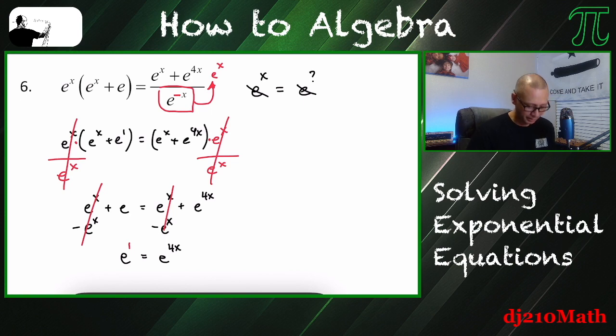So remember, it's implied that this is a 1, e to the first power. So now that I have the same bases, I really don't care about the bases. I don't care if it's e. It doesn't matter. What does matter is that 1 is equal to 4x. So solving for x, divide both sides by 4. x is equal to 1 fourth.